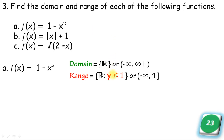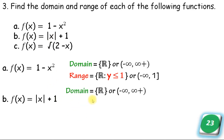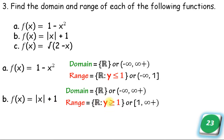We arrange the values: the range includes all real numbers where y is less than or equal to 1. All positive and negative values of x give results at or below 1. For example, x equals 0 gives 0 plus 1 equals 1. For x equals negative 2 or positive 2, f equals negative 3. So the range is y less than or equal to 1.